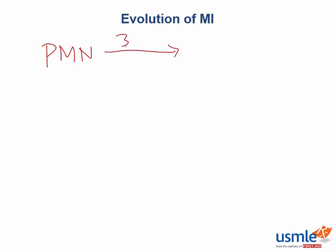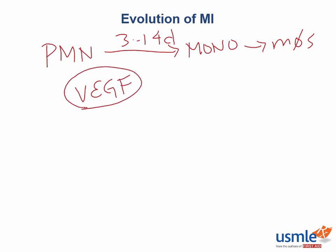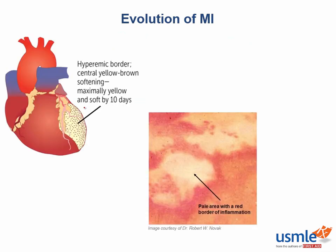Around 3 to 14 days, neutrophils call in the backup squad — monocytes, which are converted to macrophages when they hit extracellular matrix tissue outside of the vessel wall. Monocytes access the area of inflammation in the heart because vascular endothelial growth factor was released due to the hypoxia. After a couple days of stimulation by vascular endothelial growth factor, vessels start growing around the edges of the infarct.